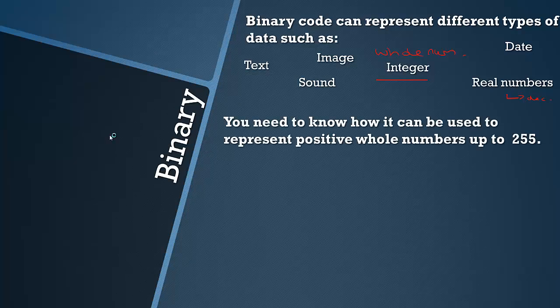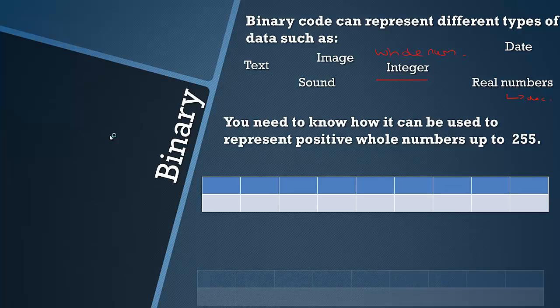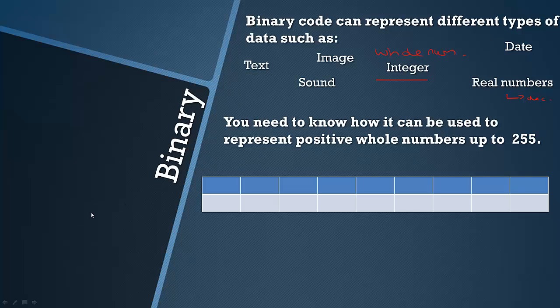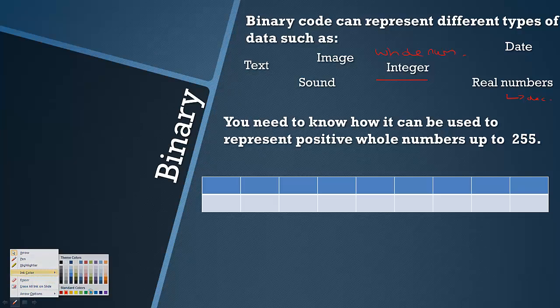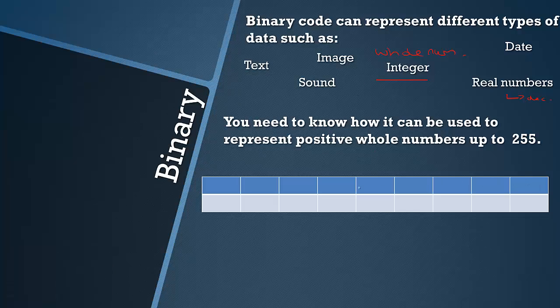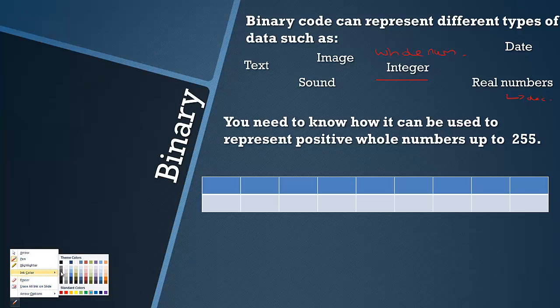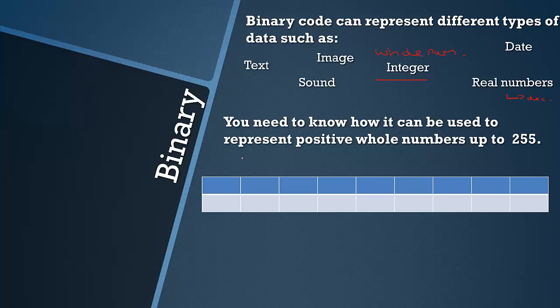You need to know how it can be used to represent positive whole numbers, integers up to 255. I'm not going to teach you how to do binary as such, I'm just going to do a few examples here. Fortunately, if you just search how to do binary code on YouTube, you'll get thousands of videos. It's very well documented. Binary is a base-2 system, so you literally times everything by 2. So it goes from 1 to 2 to 4 to 8 to 16 to 32 to 64, 128 and 256.